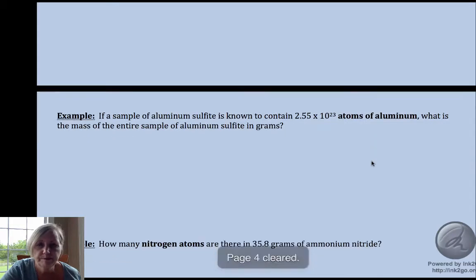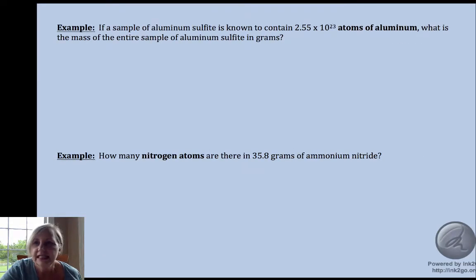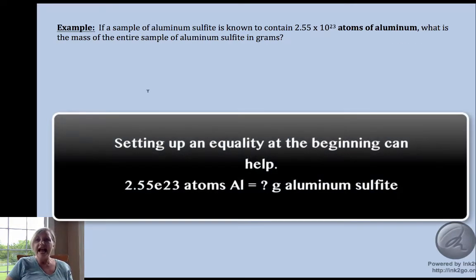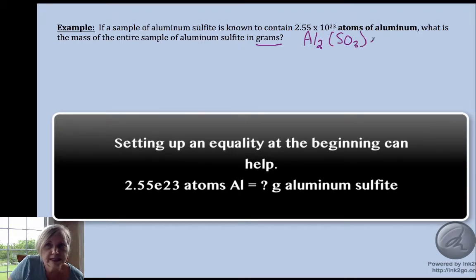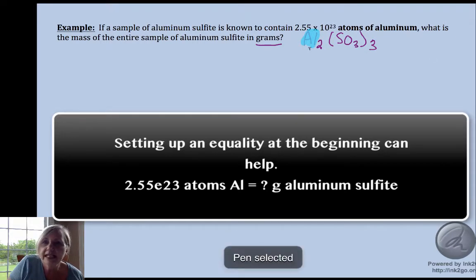Let's take a look at another example. This time I have atoms of aluminum and I want to go to grams of aluminum sulfite. So this is atoms within. The formula for aluminum sulfite - oh I hope you know those polyatomic ions - is Al2(SO3)3.